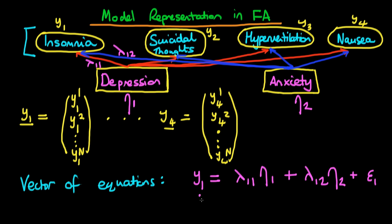And the idea with the vector of equations form is that we can essentially write down this kind of regression formula for each of the observed characteristics. So we can write Y4 is equal to lambda41, where lambda41 actually corresponds to this last red arrow.